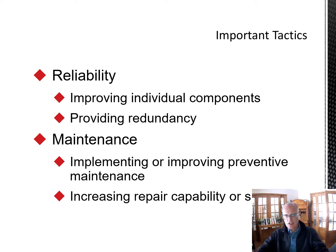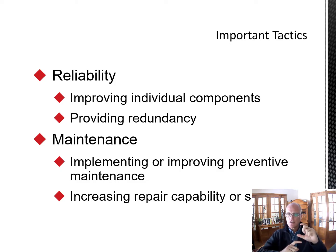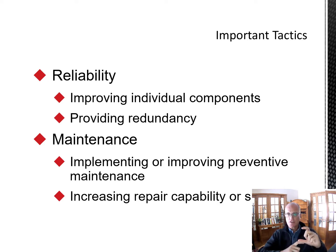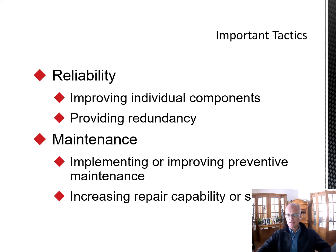We can change the probability by improving the performance of individual components, or we can provide redundancy — meaning if one piece of equipment or one process fails, a redundant or backup process kicks in, so the process only fails if both elements fail. Maintenance is also about implementing preventive maintenance and increasing repair capability so that if you do break down, you recover more quickly.